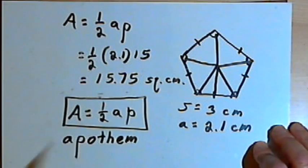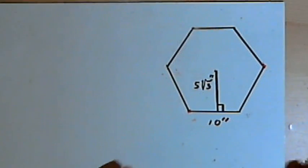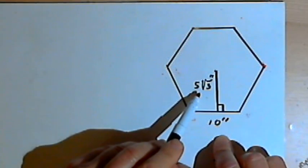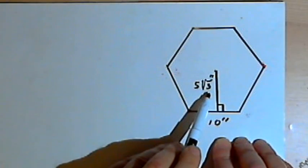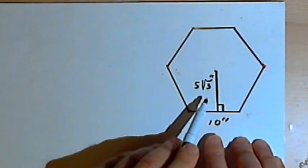Okay? So I just want to do one more, this time with a hexagon. And what I want to do here is show you that sometimes the apothem will be given with a radical sign in it, like the square root of 2 or the square root of 3 or something like that.